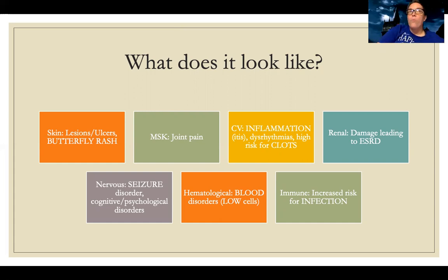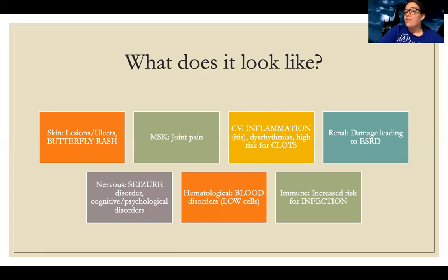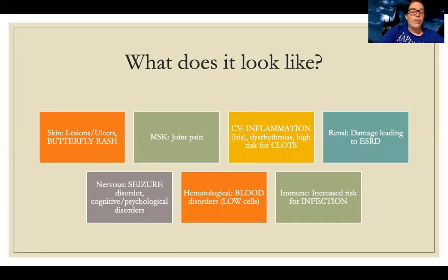Renally, almost most patients within five years of getting lupus are going to have damage or complete destruction of their kidneys. Selena Gomez has lupus and ended up needing a kidney transplant — that's very common. Patients get glomerulonephritis or other kidney damage leading to a transplant. Neurologically, they can have seizure disorders and cognitive or psychological disorders, and they're at increased risk for infection.